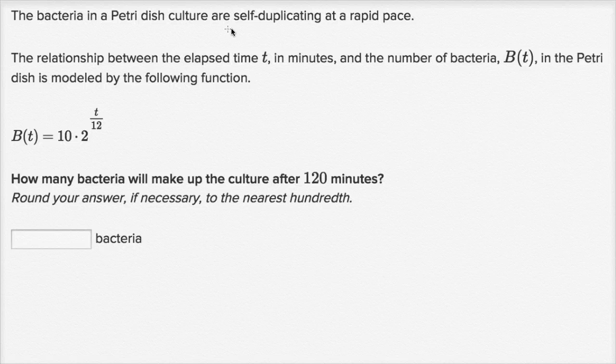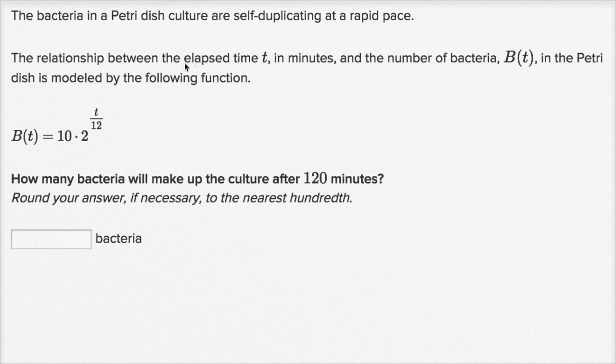The bacteria in a petri dish culture are self-duplicating at a rapid pace. The relationship between the elapsed time t in minutes and the number of bacteria B(t) in the petri dish is modeled by the following function.